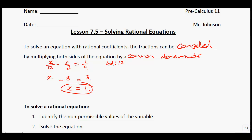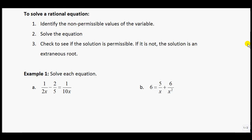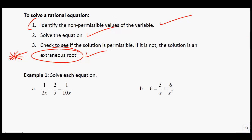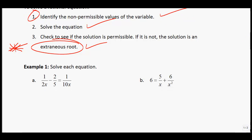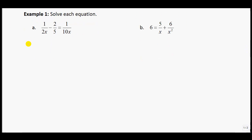In all of these examples I'm going to try to get rid of the fraction. There are a couple of steps: Step 1 is to identify your non-permissible values. Then you solve the equation. And this one is something new — check for an extraneous root. We have to make sure your solution matches up with the non-permissible values from step 1, because you might say x cannot equal a certain number, and then at the end you actually get out that number.